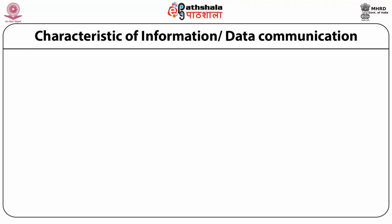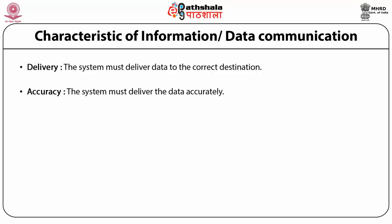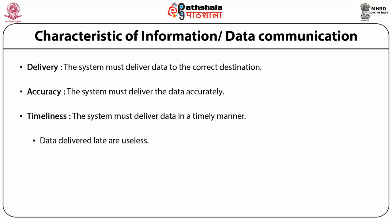Delivery means the system must deliver data to the correct destination — retrieved by the intended device or user only. Accuracy means the system must deliver data accurately; data altered in transmission and left uncorrected is unusable. Timeliness means the system must deliver data in a timely manner. For video and audio, timely delivery means delivering data as it is produced, in the same order, without significant delay — this is called real-time transmission. Jitter refers to the variation in packet arrival time, meaning uneven delay in the delivery of audio and video packets.